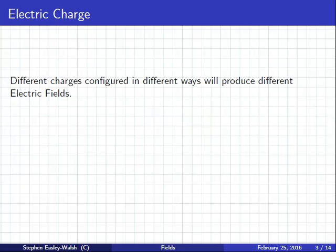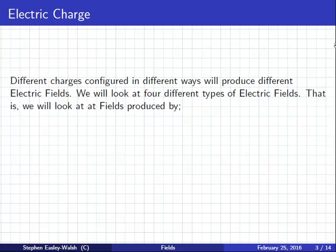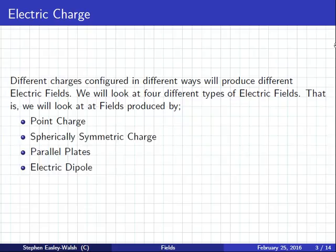Different charges configured in different ways will produce different electric fields. This is what I was saying to you earlier, Adnan, about if we have a positive and a positive together, because we had a look at positive and negative earlier. We'll look at four different types which we need for the exam: fields produced by a point charge, a spherical charge, a parallel plate and a dipole.